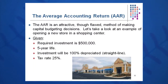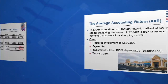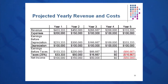Let's look at a sample investment. This project costs — let's say we're going to build a new store in a shopping center — $500,000, five-year life. The investment will be 100% depreciated straight line to zero, and the tax rate is 25%. As we learned in chapters three and four, whenever we have a new project, we do several things.